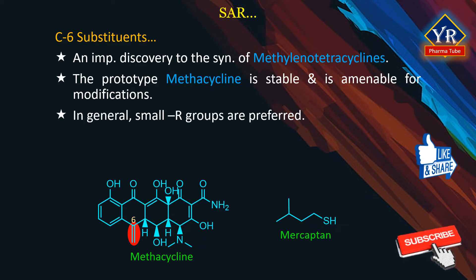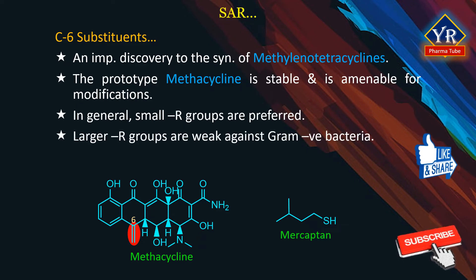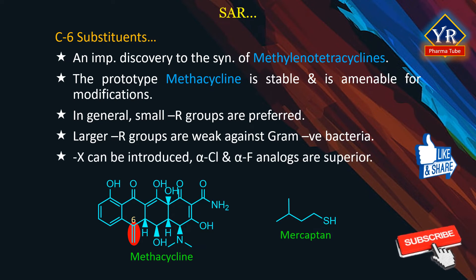In general, small alkyl moieties are preferred. Larger groups such as bulky alkyl or simple aryl moieties are weak against gram-negative bacteria, although significant gram-positive activity can be retained. As with C4 and C5 substituents, increased hydrocarbon size probably diminishes penetration into gram-negative organisms. Halogens have been introduced at the C6 position and the alpha-chloro and alpha-fluoro analogues are superior to their epimeric counterparts. However, these modifications offer no advantage in terms of potency and remain an academic interest only.